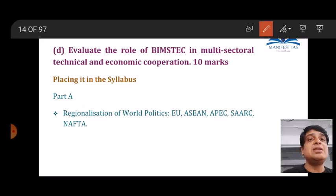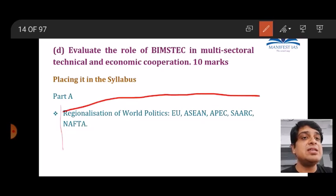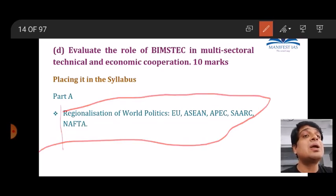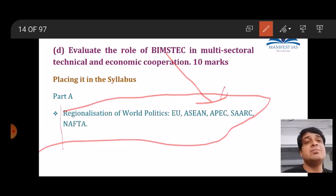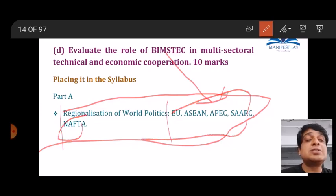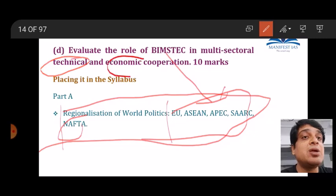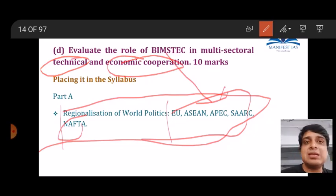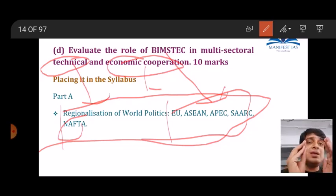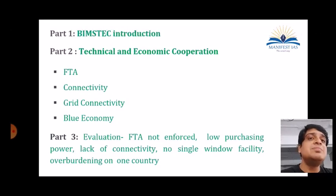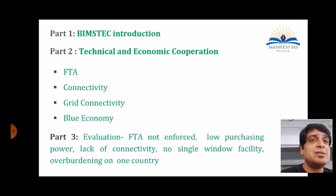The fourth question: 'Evaluate the role of BIMSTEC in multi-sectoral technical and economic cooperation.' Placed in the syllabus under regionalization of world politics. A key observation: BIMSTEC is not explicitly mentioned in the syllabus, yet it was asked. This is a new development — organizations prominently impacting Indian foreign policy are being asked even if not explicitly mentioned in the syllabus, so prepare accordingly. BIMSTEC — Bay of Bengal Initiative for Multi-Sectoral Technical and Economic Cooperation — is a regional organization established in 1997, headquartered in Kathmandu, Nepal.